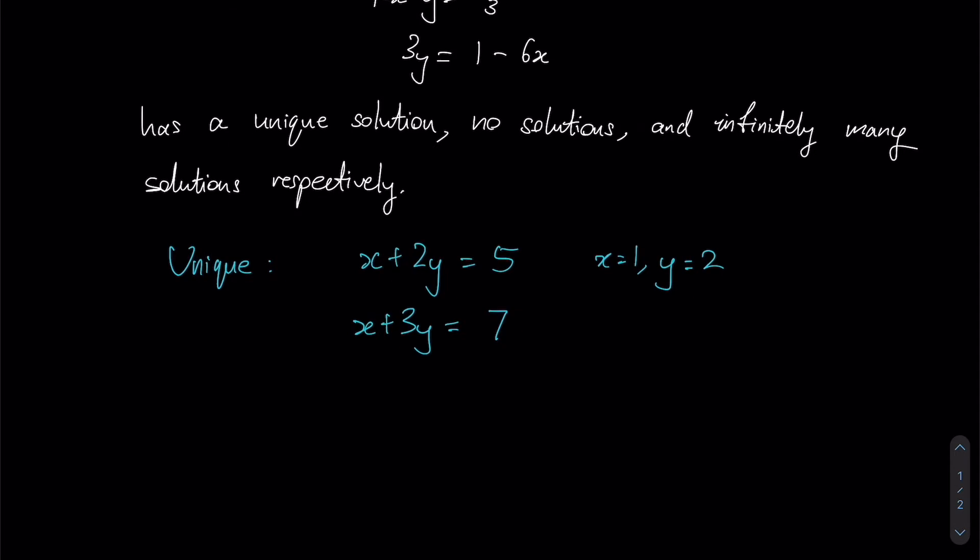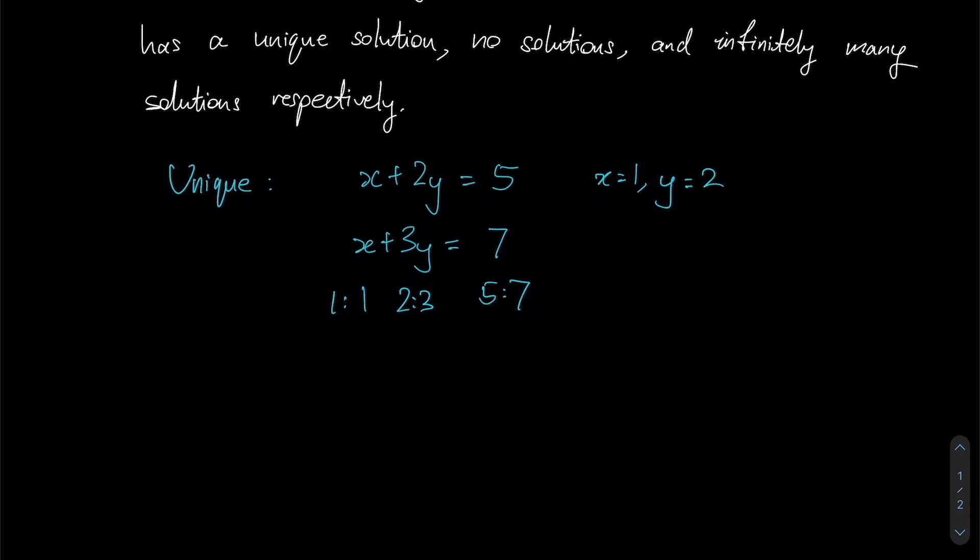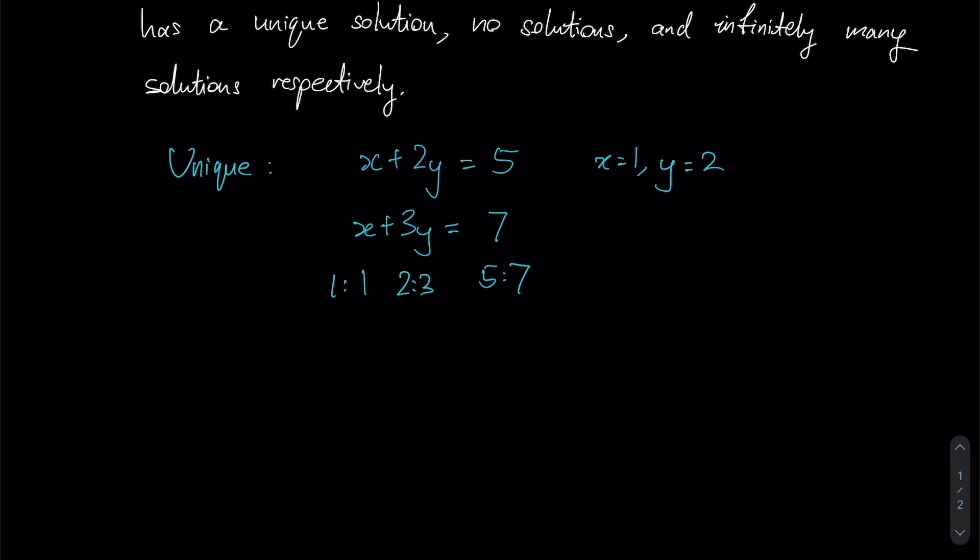The reason you were able to get this is that if you compare the ratios across your two equations: x to x is simply 1 is to 1, y to y is 2 is to 3, and your constant has a ratio of 5 is to 7. Notice that all three ratios here are in fact different from each other, and therefore using this condition we can see that you will indeed obtain a unique solution. Vice versa, we can assume that if my ratios were all the same it would give me a different circumstance.